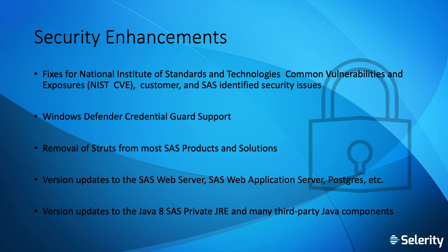A number of third-party components have also been upgraded. The SAS web server is now running Apache 2.4.43 with OpenSSL 1.0.2U. Tomcat is now at version 8.5.54.B, and the TC server equivalent is now running version 3.2.22. Postgres has also been updated and is now at version 12.3 with M7, although whether you get this as part of an upgrade will depend on how you actually do your upgrade. If you perform your upgrade by installing fresh, or using the SAS migration utility to upgrade to a new machine, you will get Postgres 12.3 right off the bat. However, if you do an upgrade in place to get M7, you will still be running your original version of Postgres, most likely version 9.